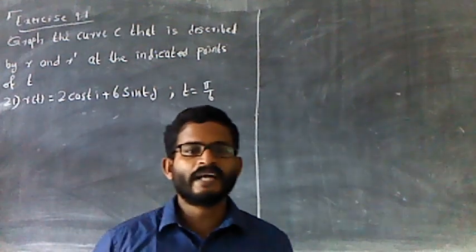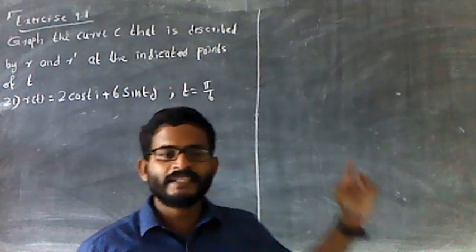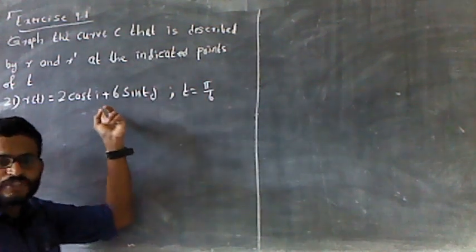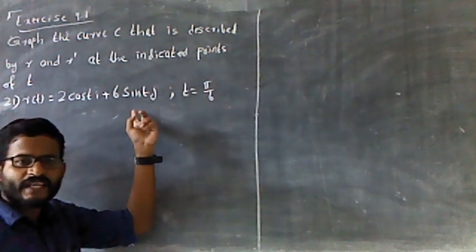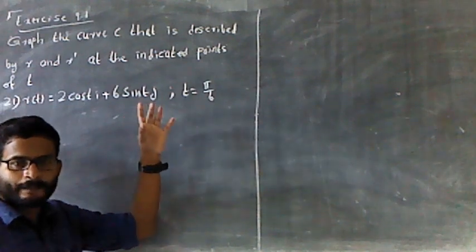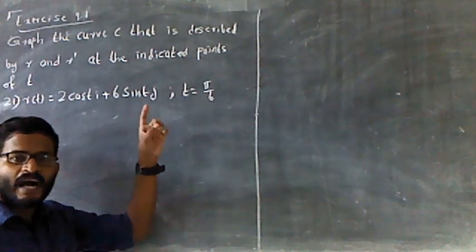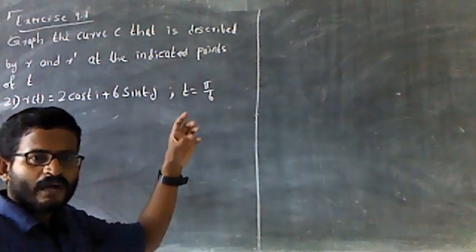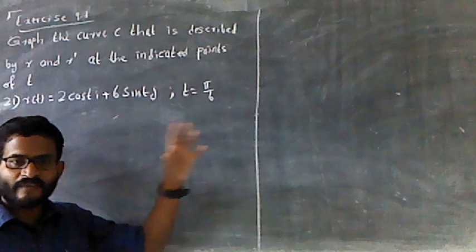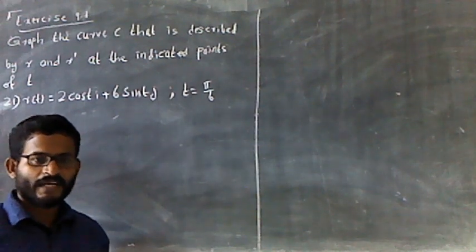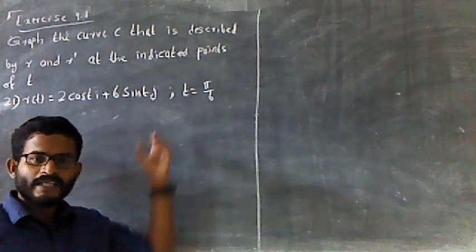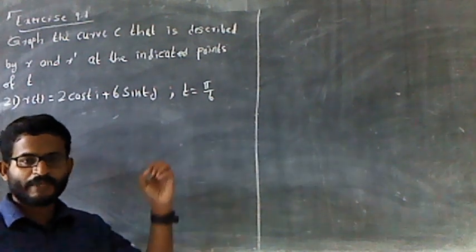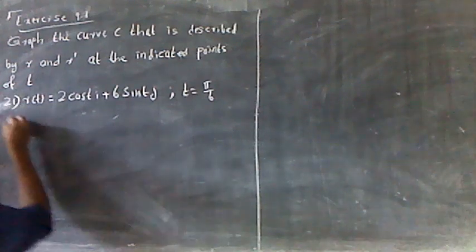We have the curve C. It is R of T and R. This vector function is evaluated at t equal to 5π/6. We will look back at the vector function and look at the parametric equations. This is the solution.